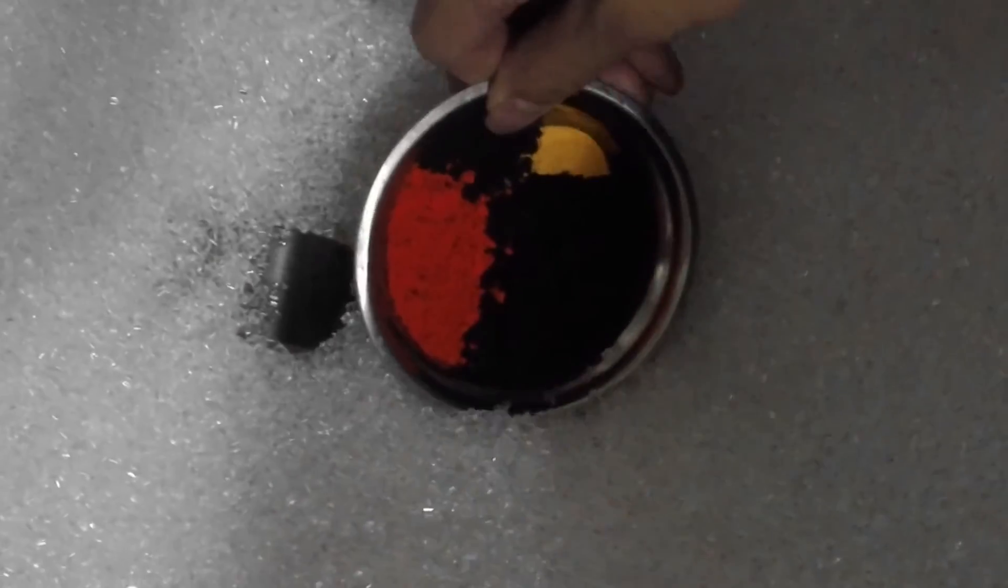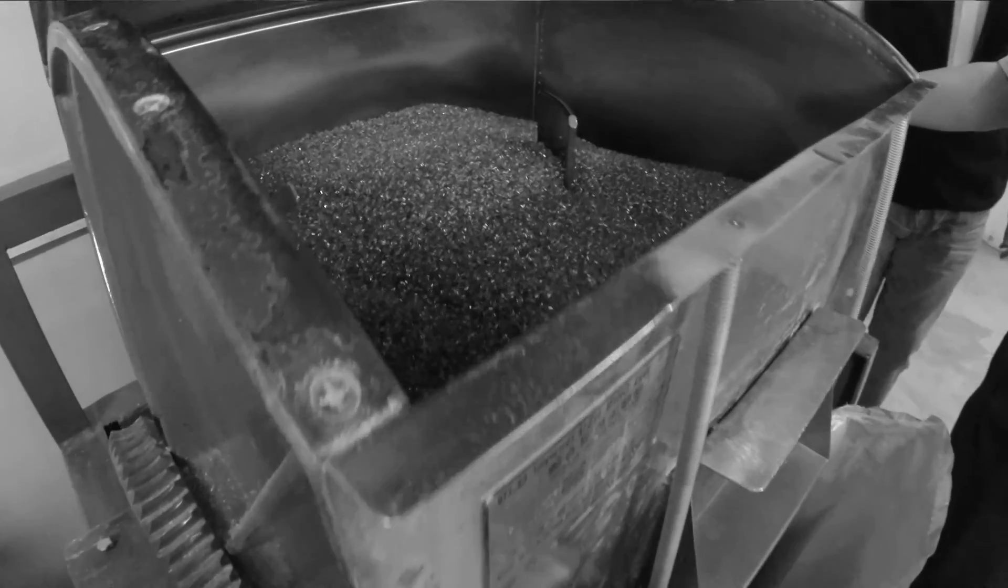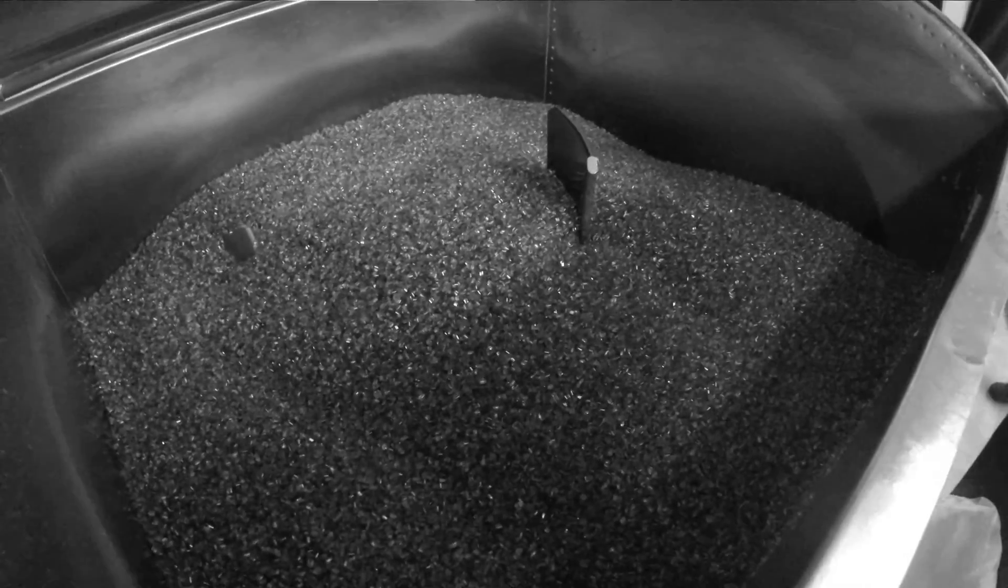The dye is then mixed with raw polycarbonate pellets in a large tumbler so it is evenly coated throughout. This ensures uniformity of color in every batch from lens to lens.